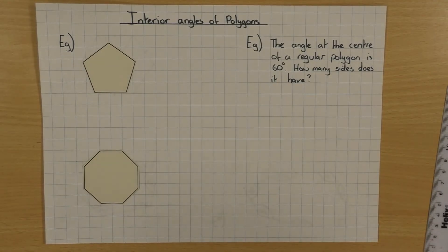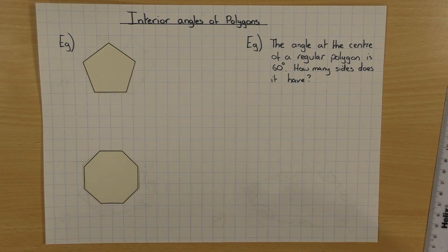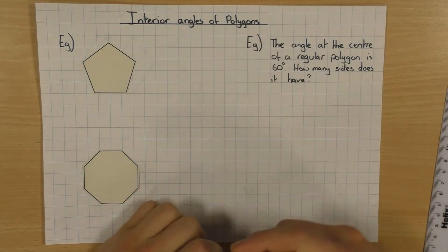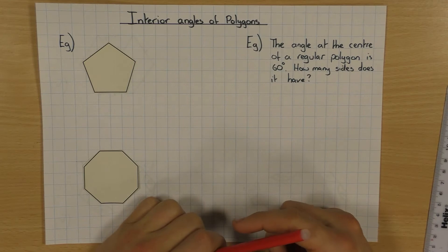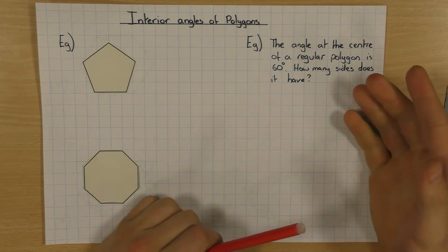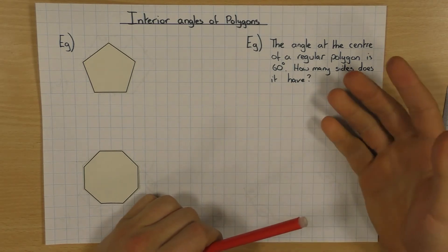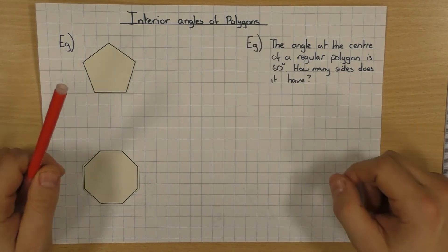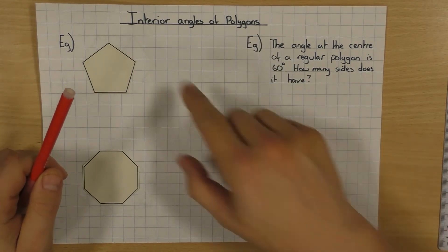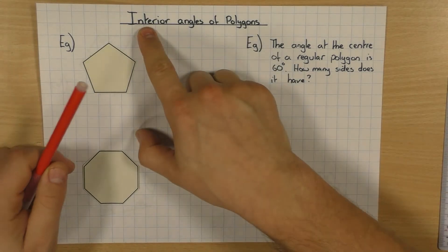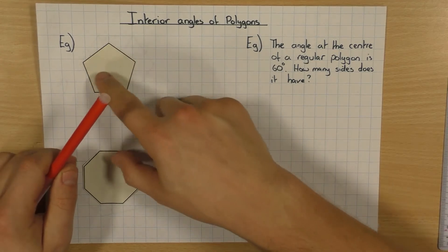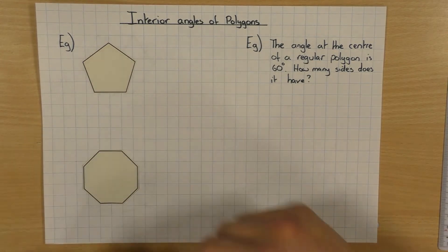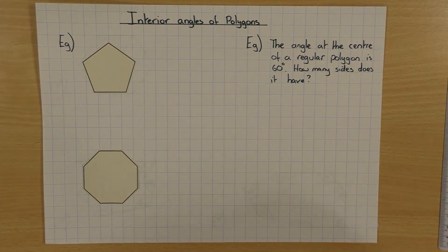Hi guys, in this video we're going to have a look at interior angles of polygons. Polygon just means a many-sided shape — it could be a three-sided shape, a four-sided shape, a five-sided shape, a ten-sided shape. And the word interior, as you might have already guessed, just means inside the shape. So we're going to look at all the angles inside these shapes.